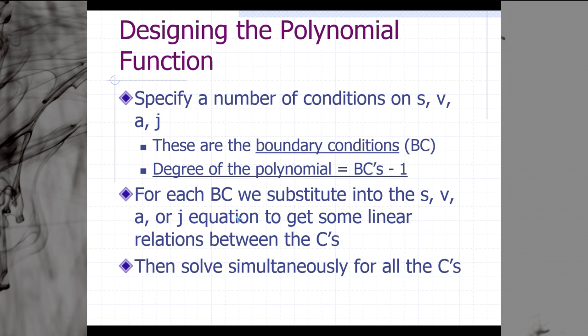To design the polynomial function, we begin by specifying a number of conditions on the position, the velocity, the acceleration, and the jerk. These conditions that we specify are called boundary conditions, or BC. The degree of our polynomial, the highest power that we see, is going to be equal to the number of boundary conditions that we have minus one.